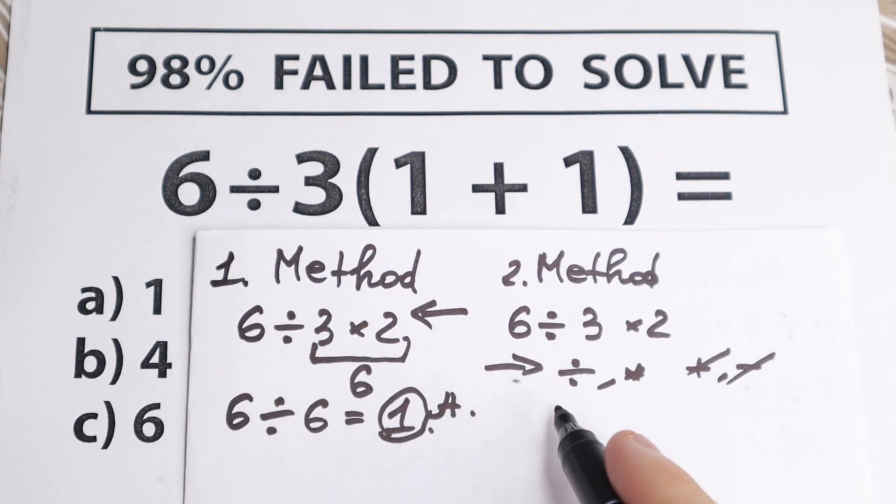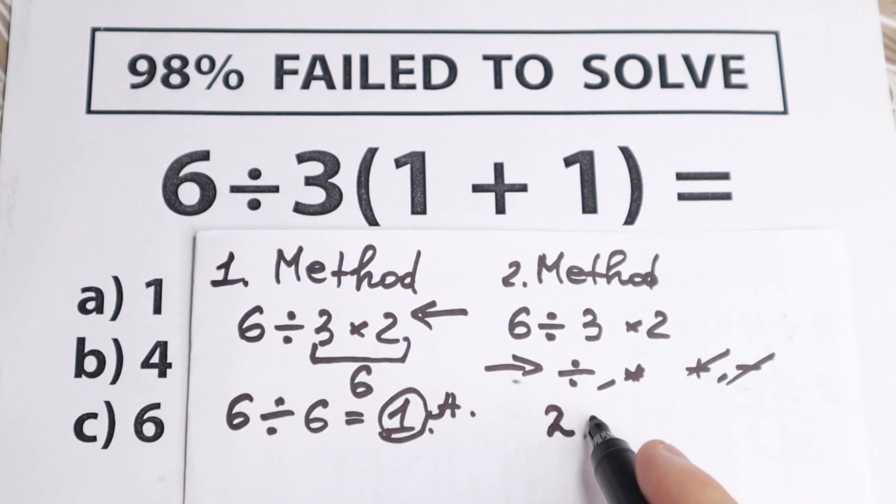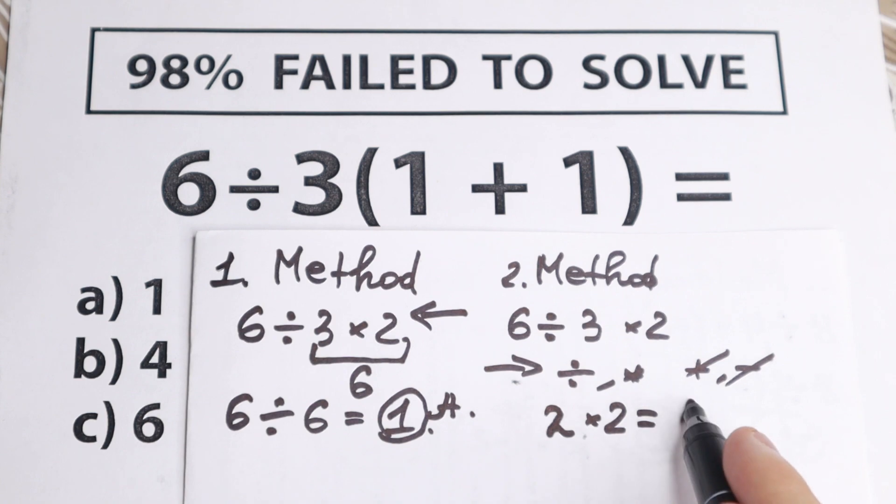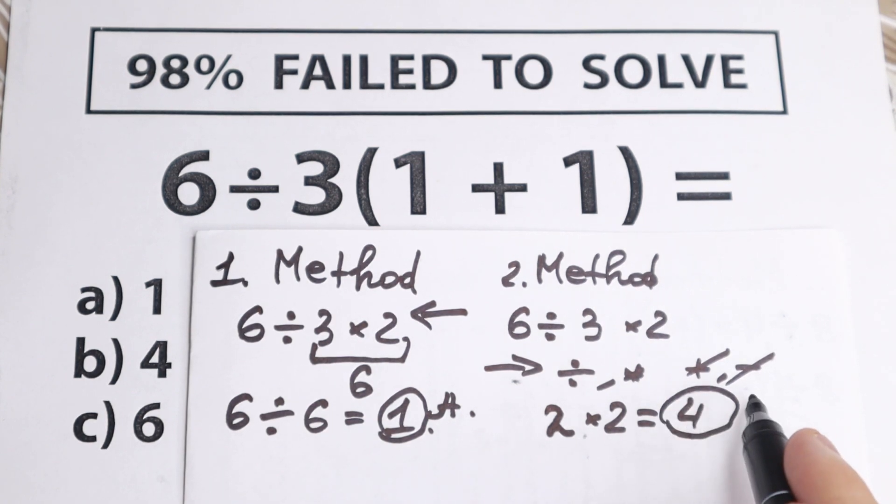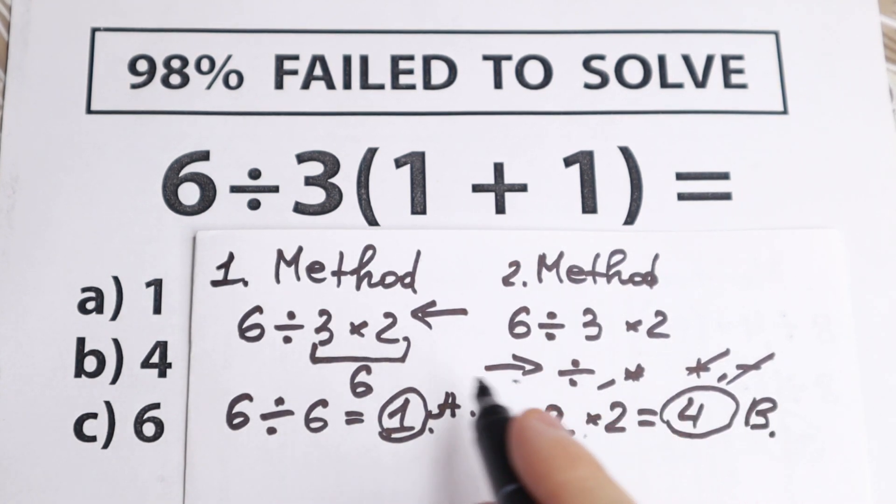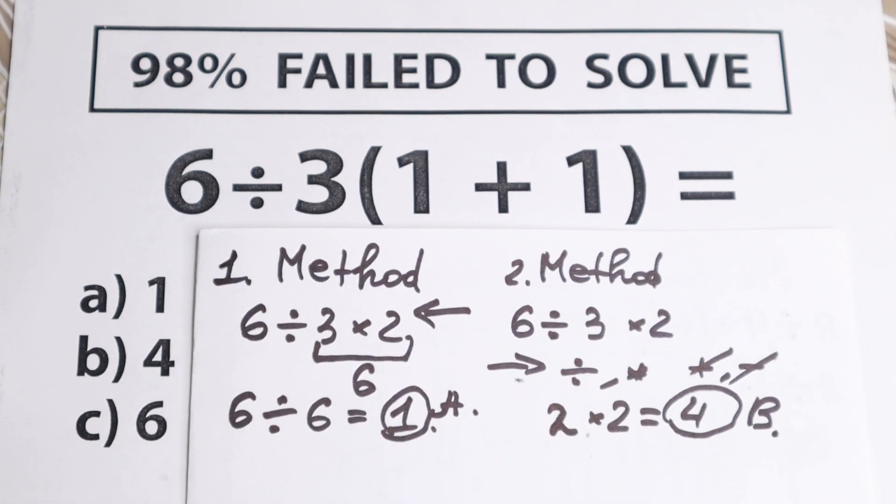Take a look closely, 6 dividing by 3, equal to 2. 2 times 2, equal to 4. And this is option B. We have this option right here, and this is a correct option.